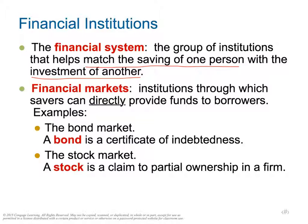The primary functions of each institution are that they accept deposits, provide commercial loans, real estate loans, mortgage loans, or issue share certificates. In financial markets, the idea is that savers can directly provide funds to borrowers.